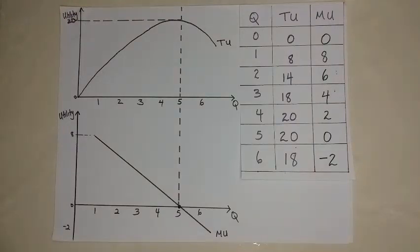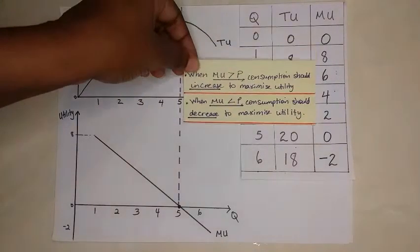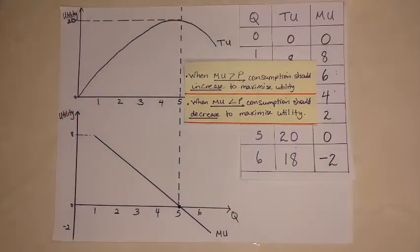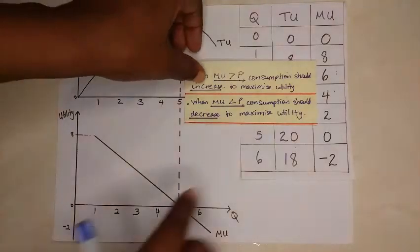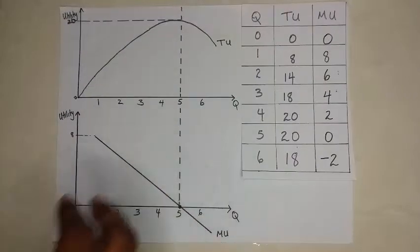And it doesn't make sense to keep consuming goods that will give you less satisfaction than the price we are paying. So it would mean then that when marginal utility is greater than price, consumption should keep increasing to maximize utility. And when marginal utility is less than price, consumption should decrease to maximize utility. Remember, as a rational consumer, we aim to maximize utility.